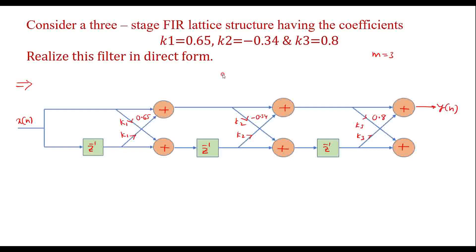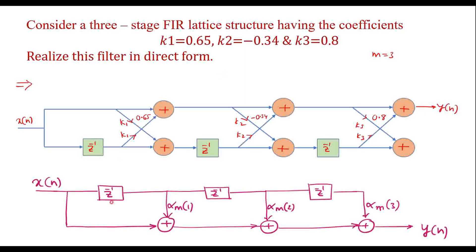The direct form structure looks like this. Here we have input x(n) and output y(n). The direct form coefficients are α_m(1), α_m(2), and α_m(3). Now we are supposed to calculate the direct form coefficients α_m from the lattice coefficients k.